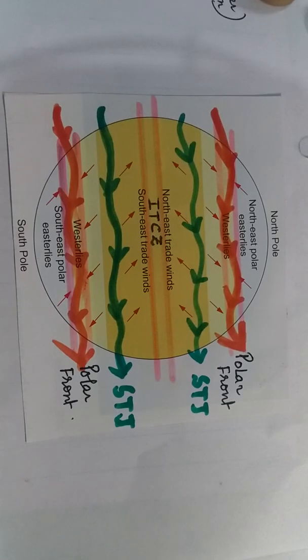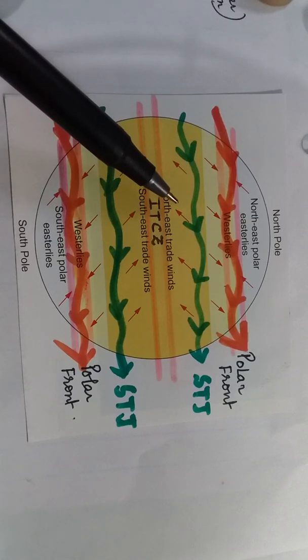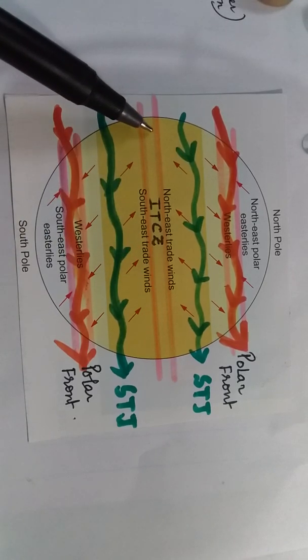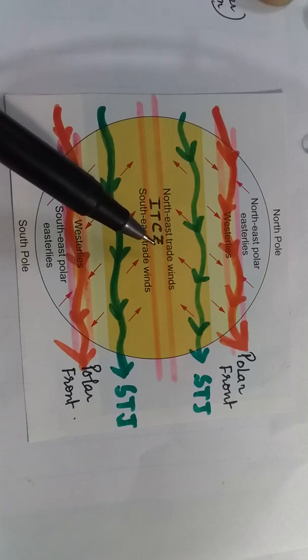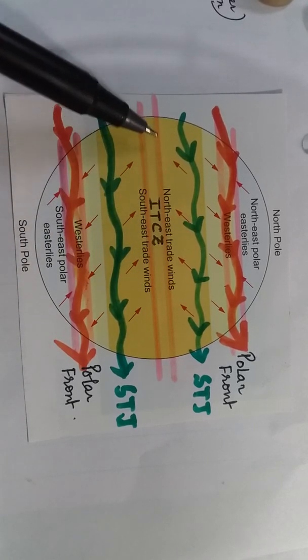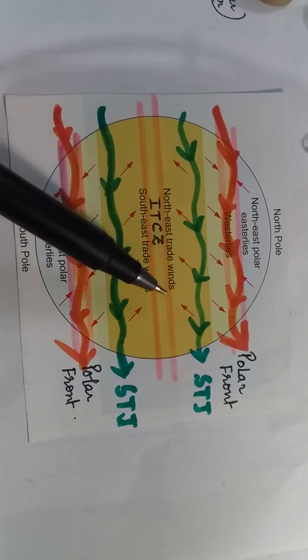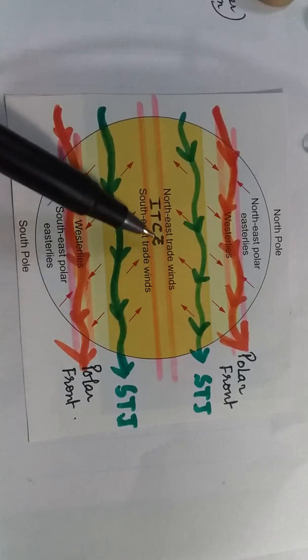Let us first understand the air mass theory. Referring to the world pressure belt, the southeast trade winds from the southern hemisphere and the northeast trade winds from the northern hemisphere meet in the region known as the ITCZ — the Intertropical Convergence Zone. This region is also called equatorial low pressure, where air is always ascending, there is maximum cloud formation, heavy rainfall, and tropical cyclones also develop here.